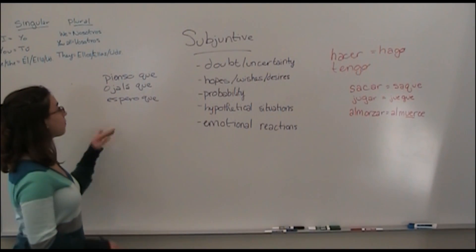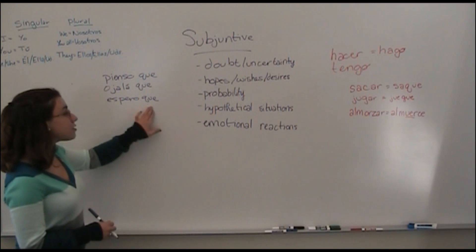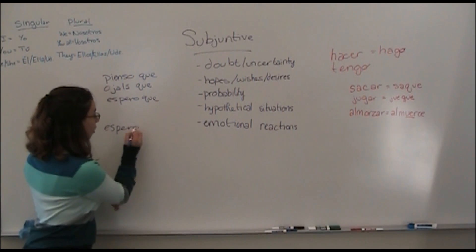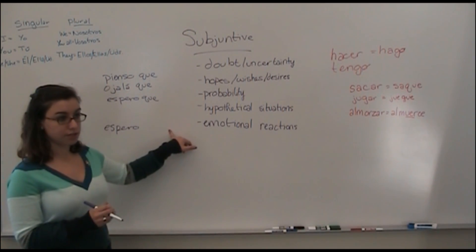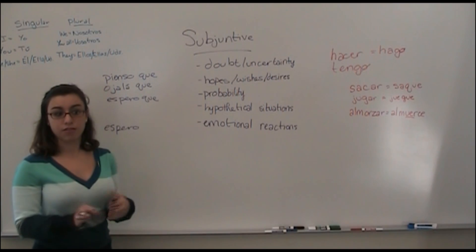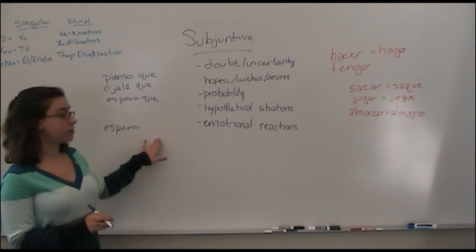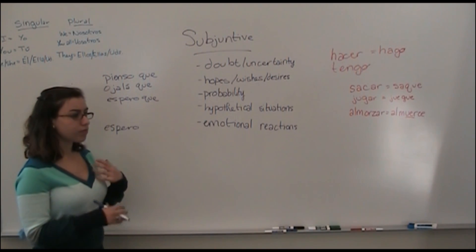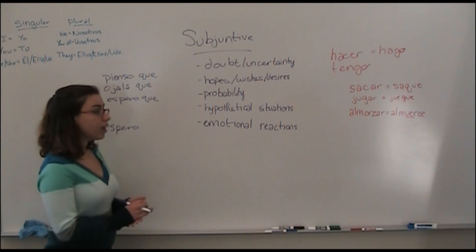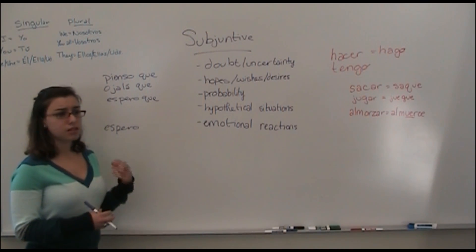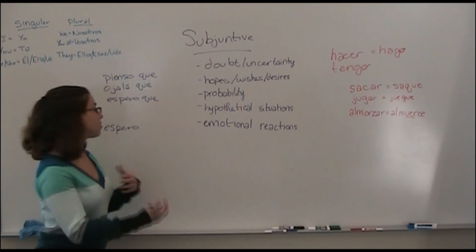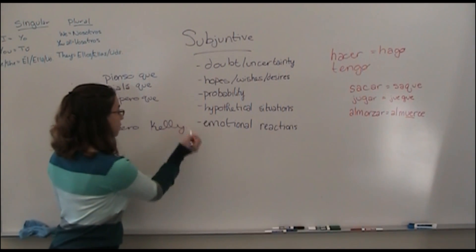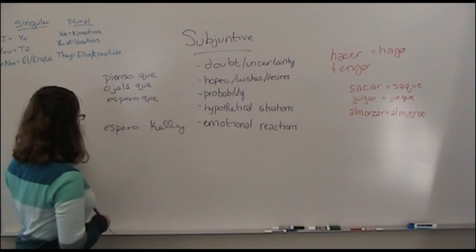You have to be careful here because if there is no que afterwards, if we just had espero, we would not use the subjunctive next. We would use the infinitive. You cannot have two conjugated verbs right next to each other. So let's say you said espero, normally if you didn't have the que, you would probably be waiting for someone. So you say espero Kelly. So that would be I'm waiting for her, or for Kelly.